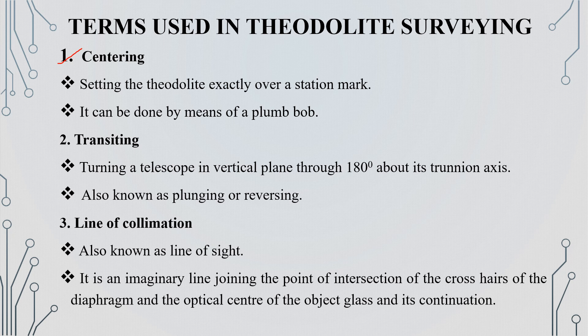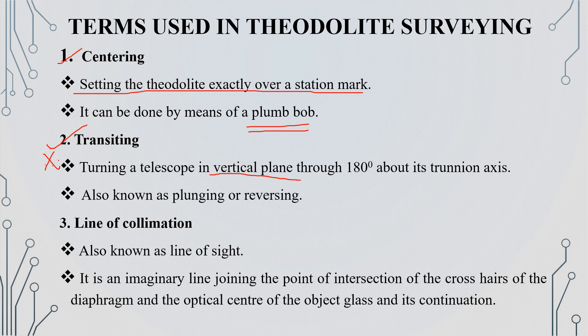The first term is centering. Centering is setting the theodolite exactly over the station mark — we set the exact center of the theodolite over the station. The next important term is transiting. Transiting is the rotation of the telescope about the horizontal axis in the vertical plane. It is also called plunging or reversing.